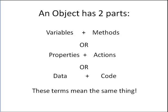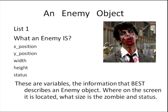Here's where the design comes in. Each enemy we face in our game is an object. The first step in designing an object is two simple lists for our two components. List number one: what an enemy is — what information best describes an enemy.